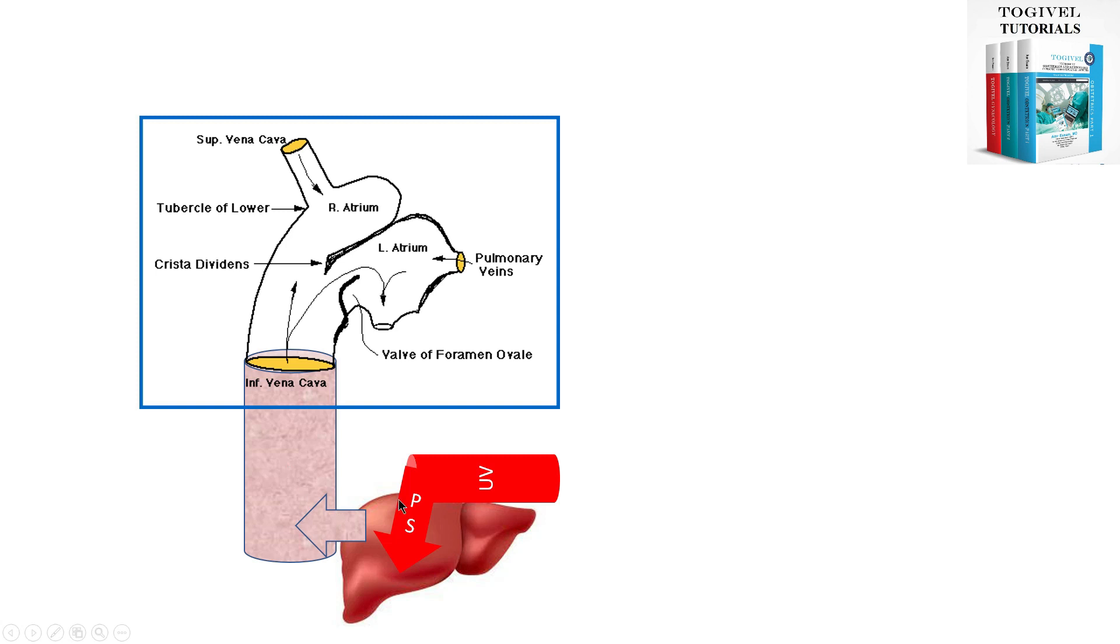To increase oxygen content in the inferior vena cava, a smaller continuation of the umbilical vein joins the inferior vena cava directly. This is the ductus venosus.